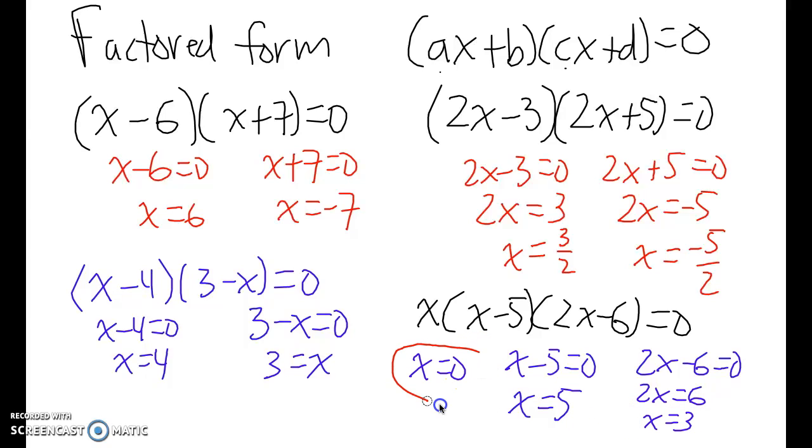So in this question, X could either be zero, X could be five, or X could be three. And this is just using that null factor law, the zero product property, that if the product is equal to zero, then one of these three things must be equal to zero.